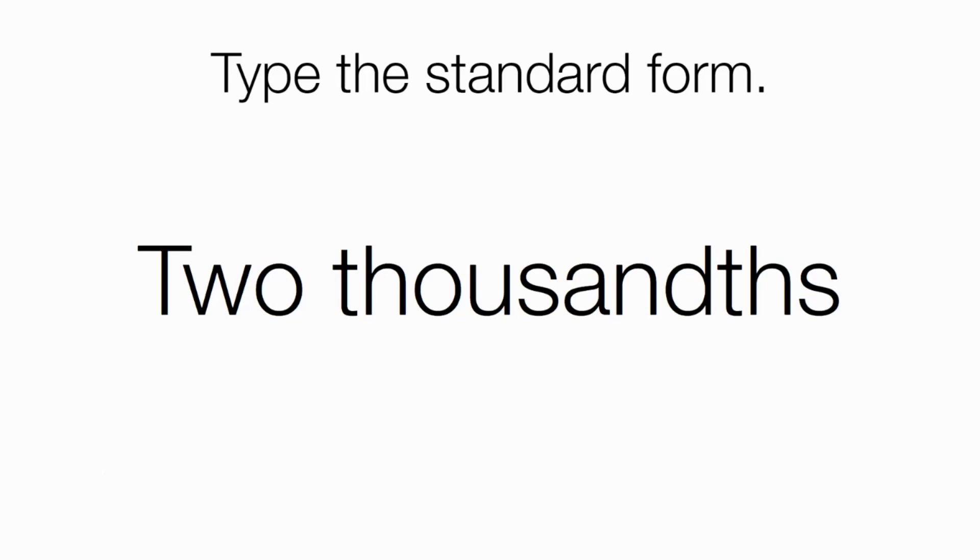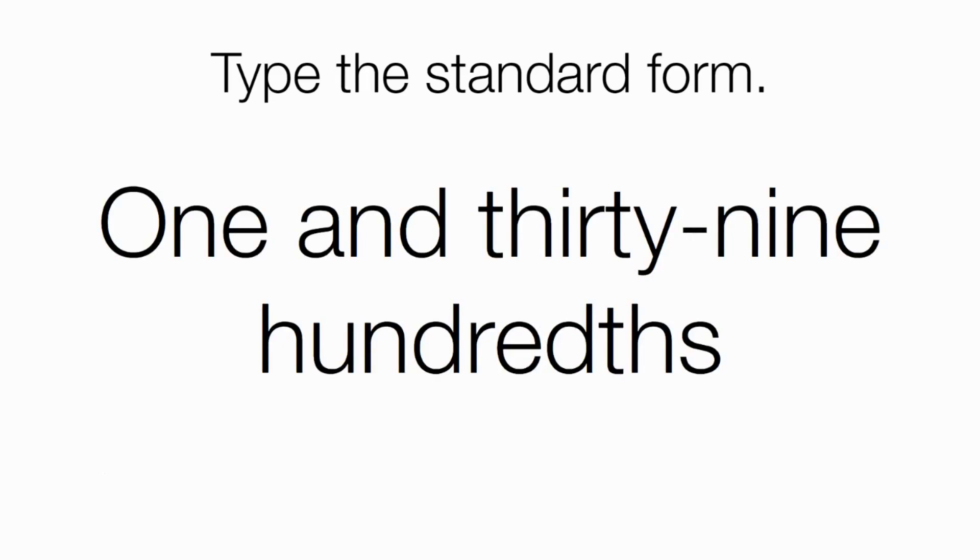Please type the standard form for this number. And the standard form for this number is... That's how you write two-thousandths in the standard form using just numbers. How about this one? Please just type the standard form. And the number is one and thirty-nine hundredths. And in standard form, it looks like this. One decimal point. Thirty-nine hundredths.